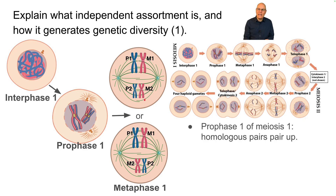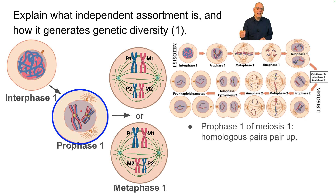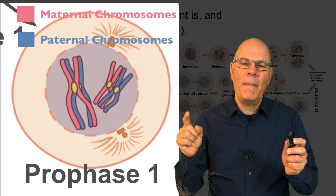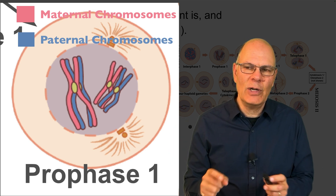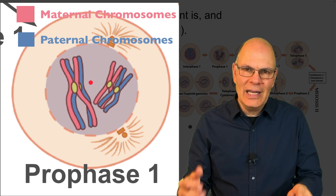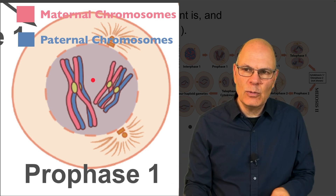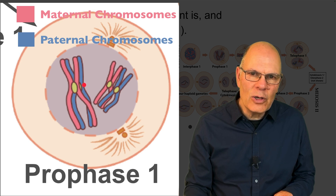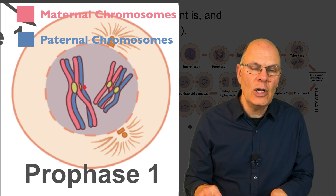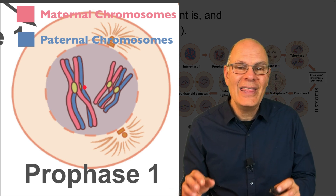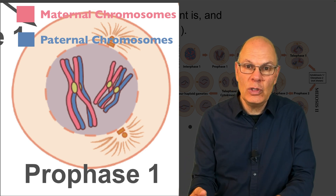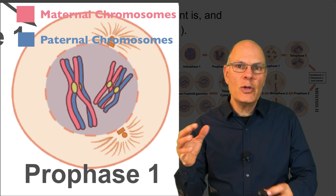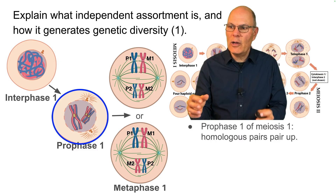What happens is that during prophase 1, homologous pairs pair up. In the adult organism undergoing meiosis, the chromosomal parents wind up finding each other. In the germ cells, the mother's and father's chromosome 1 will find one another — they actually embrace. Chromosome 2 does that, chromosome 3 does that. All those chromosomes find one another and embrace.